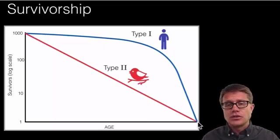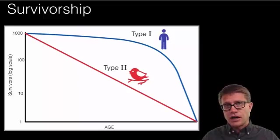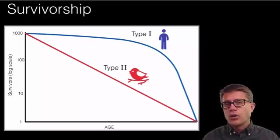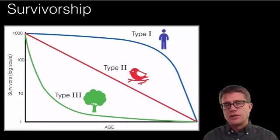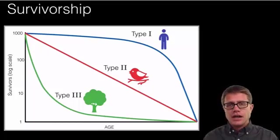We could also have a Type 2 survivorship curve. Songbirds are an example—from the moment they're born they're dying off at a constant rate. Or we could look at Type 3. Those are individuals like the acorns from a tree. Almost all of them die, but a few of those survive and those make up the plants that we have.